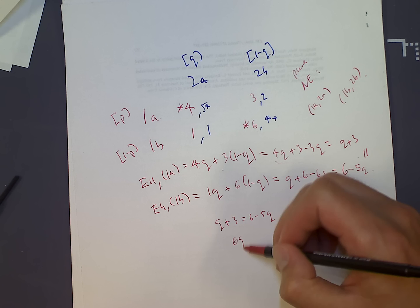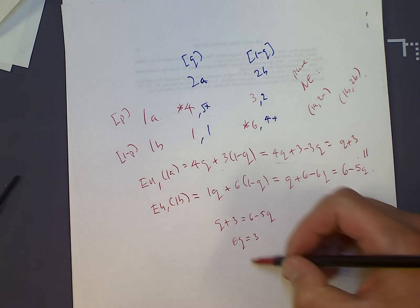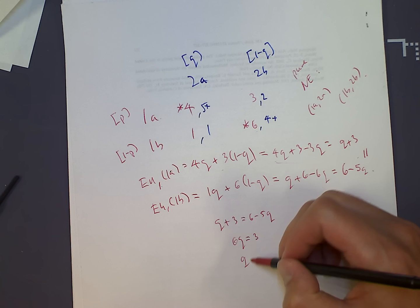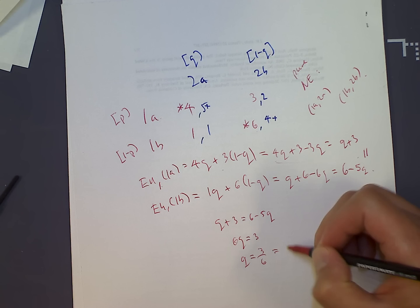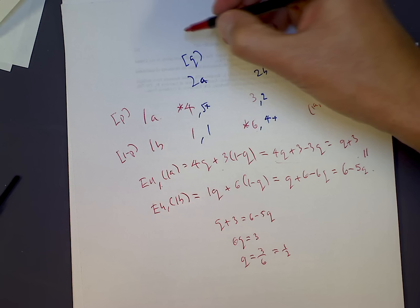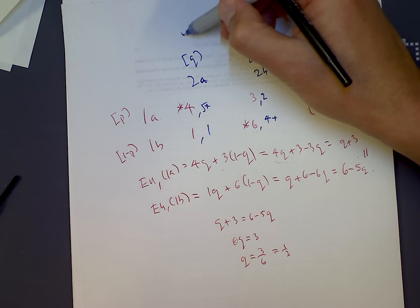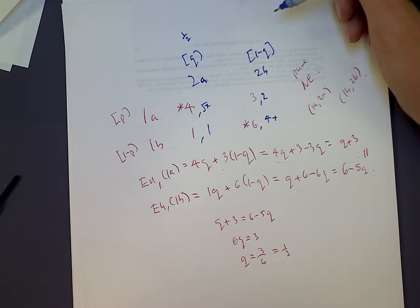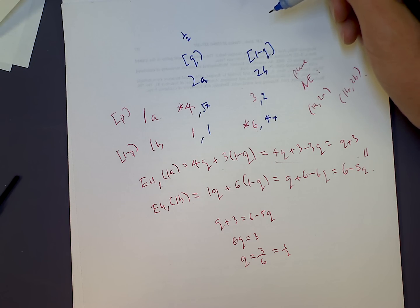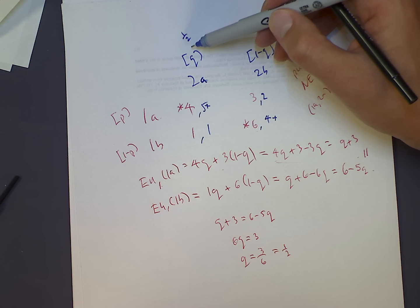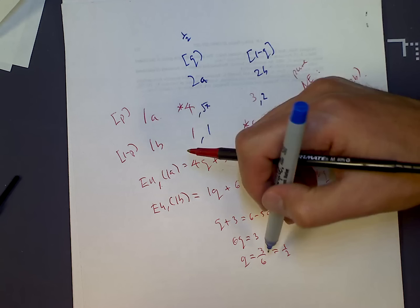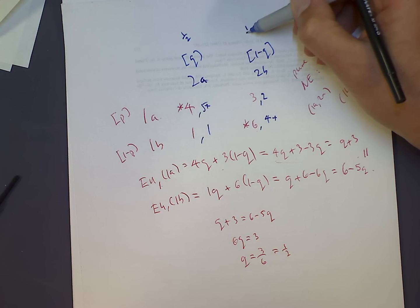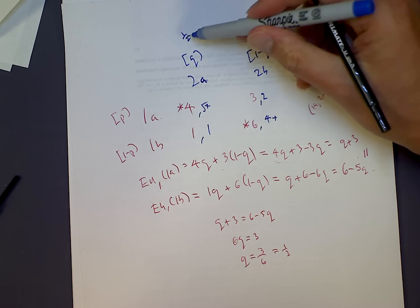Solving: 6Q equals 3, therefore Q equals 1/2. So Q is 1/2 and 1 minus Q is also 1/2.